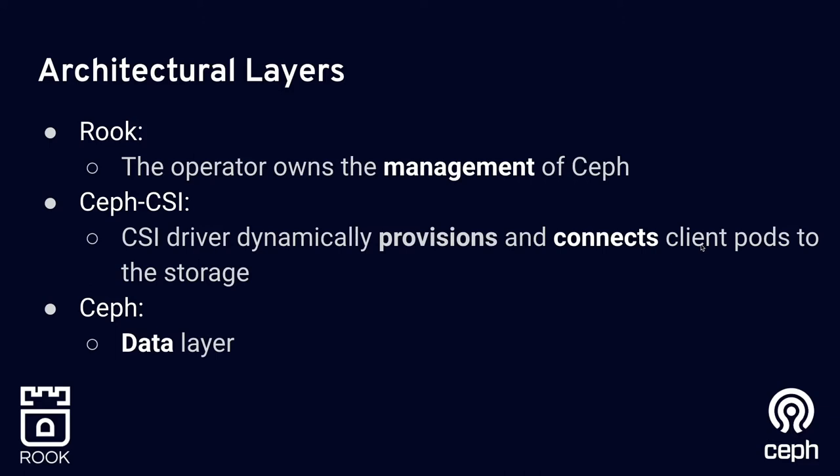Let me talk about three layers of the system that are important and helpful to understand. First, Rook, the operator, has an operator for Ceph and it owns the management of Ceph — it deploys Ceph and manages everything about Kubernetes integration with Ceph. Second layer is CSI, which allows you to dynamically provision and attach your client pods or applications to the storage layer. There's a Ceph CSI driver that provides that in Rook. And then the third layer is the data layer with Ceph itself.